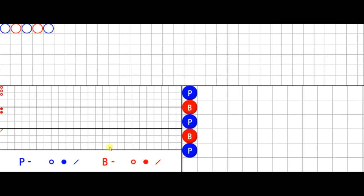The symbols for the big eye boy are hollow circles — you can call them rings or donuts. The symbols for the small road are solid discs — hamburgers, whatever you want to call them. And the symbols for the cockroach pig are slashes — toothpicks, french fries, or chopsticks — whatever you want to call them, as long as you know what they are.